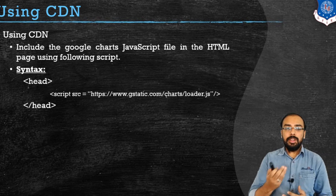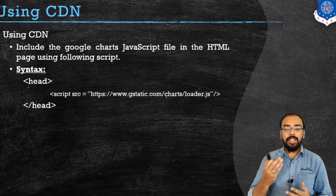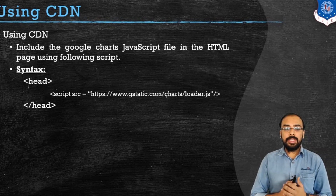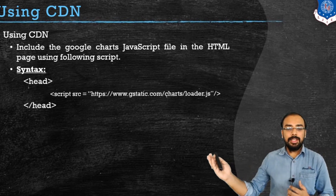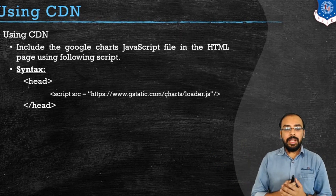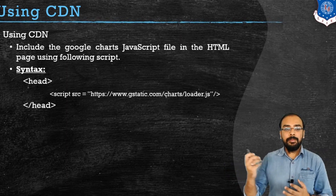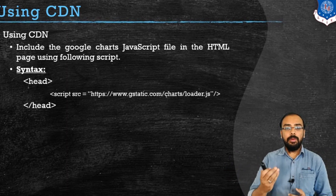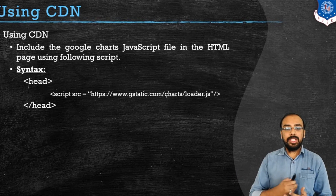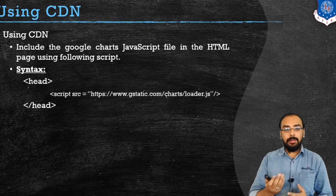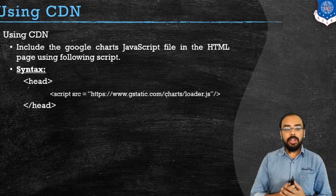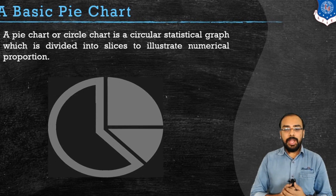The second option is using CDN, which stands for Content Delivery Network. Similarly, we use a script element inside the head tag with the SRC attribute, and the path will be: https://gstatic.com/charts/loader.js.